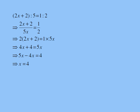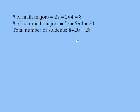Now, if x is 4, that tells me the number of math majors was 2x, but x is 4, it has to be 8. And the number of non-math majors was 5x, since x is 4, it has to be 20. And I'm supposed to find the total number of students. That has to be 8 for math majors, 20 for non-math majors. If you add them up, you get 28. So my final answer is 28.